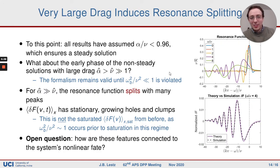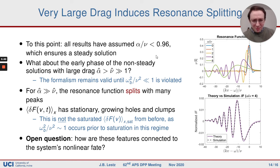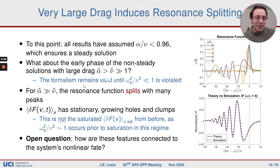Up to this point we've assumed drag is less than scattering, because we wanted to study the steady state solutions which require this. But we can apply our formalism to study the early phase of non-steady solutions when drag is larger than scattering. When drag is much larger than scattering, the resonance function not only shifts more and more, but also splits into multiple peaks of comparable magnitude — distinct regions of velocity space with very strong wave-particle interactions. These features are also reflected in the delta f, confirmed in Vlasov simulations.